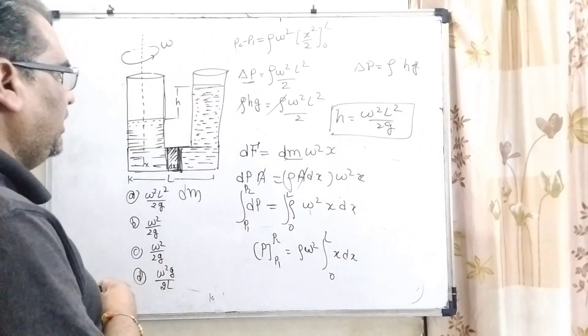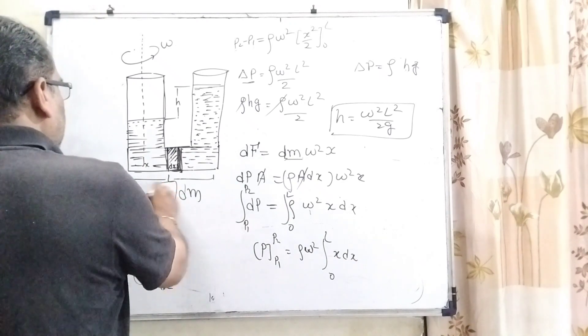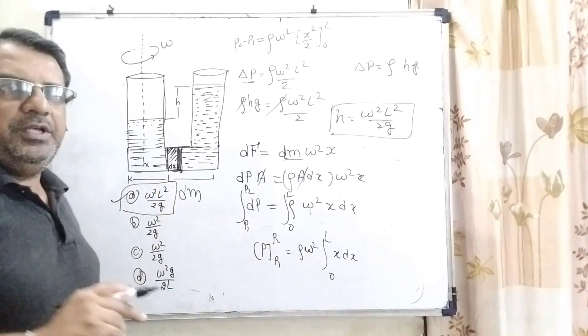Let's see which option matches here. Omega square L square by 2g - that is the first option matching here.